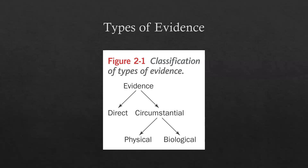So what is evidence? Evidence is basically anything that doesn't belong — or possibly does belong — in a particular area but helps lead investigators in the right direction. There are different types of evidence, which is really the purpose of this video. Under the umbrella term of evidence, we have two divisions: direct evidence and circumstantial evidence. If evidence is circumstantial, it can be physical or biological. I want you to visualize this flow chart.